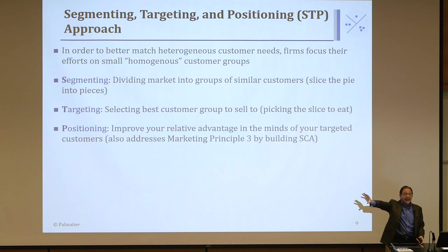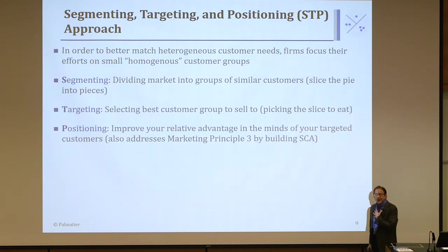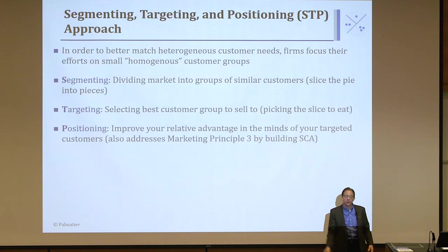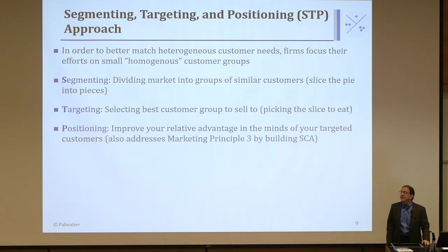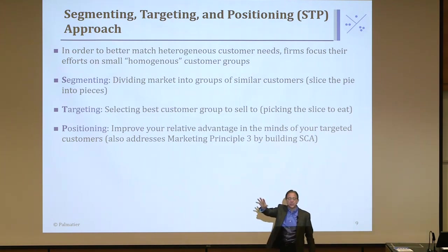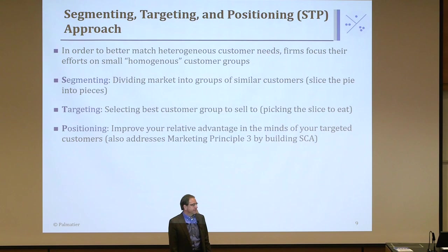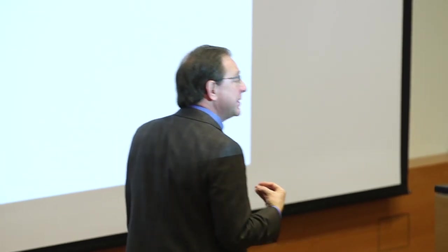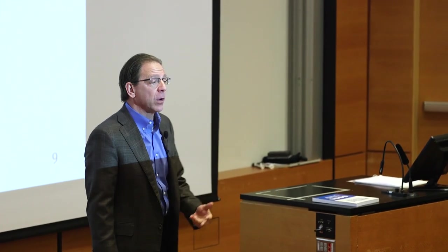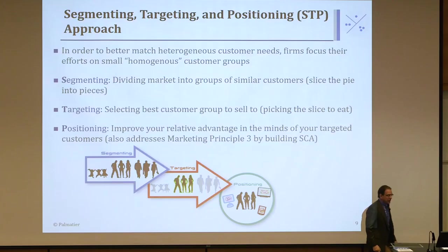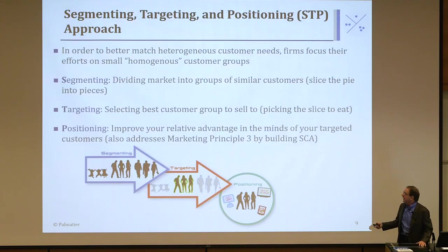The third step is positioning. Once I've decided I'm going after the minivan segment — selected based on how good I am at making minivans versus competitors and how attractive the market is — I want to build in the mind of all potential minivan customers that my product is the best, that I'm the minivan supplier. Positioning is placing yourself right on top of the segment you're going after, based on all the needs and desires they have — it might be brand, price, space, performance, whatever characteristics they care about. So STP is segmenting, targeting, and positioning.